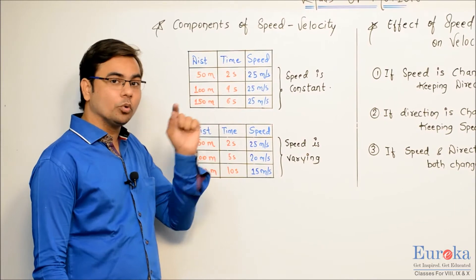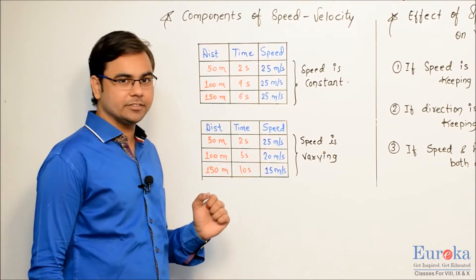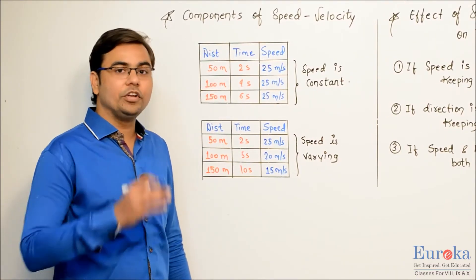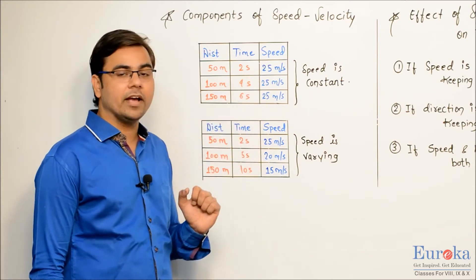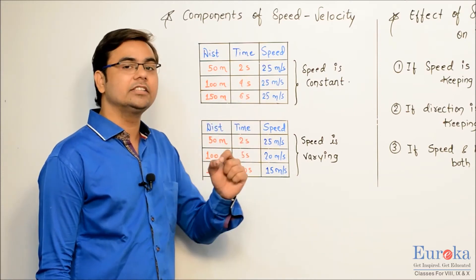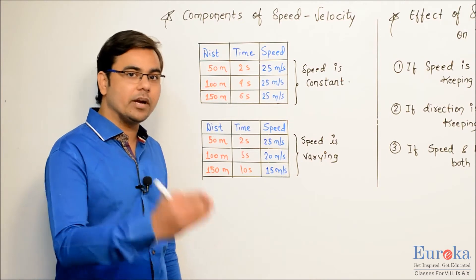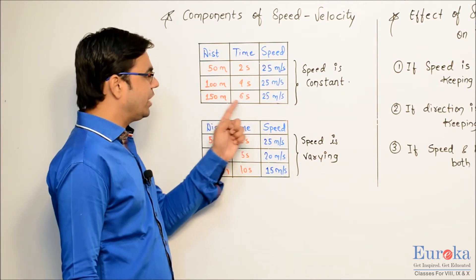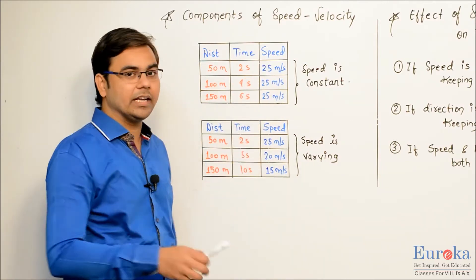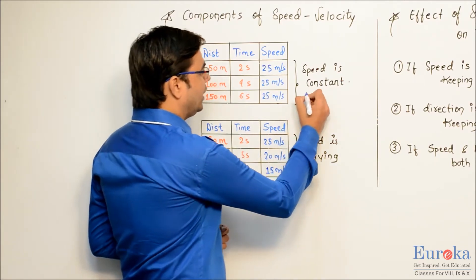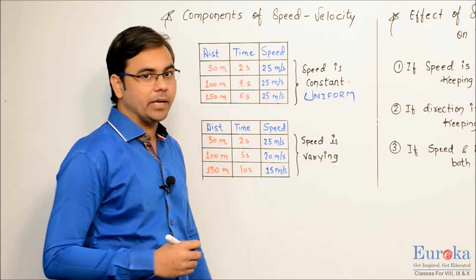An object covers 50 meters in 2 seconds, 100 meters by 4 seconds, and 150 meters by 6 seconds. The formula for speed is distance divided by time. So 50 divided by 2 gives 25 m/s; 100 divided by 4 gives 25 m/s again; and 150 divided by 6 is also 25 m/s. The speed of the object is constant. Whenever the speed is constant, we call it uniform speed.